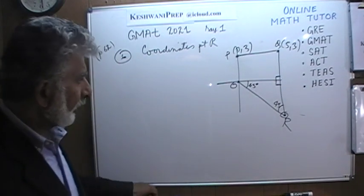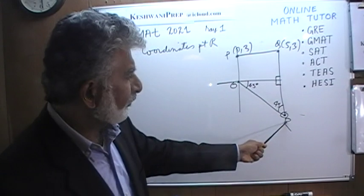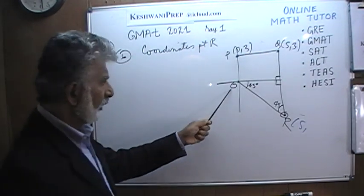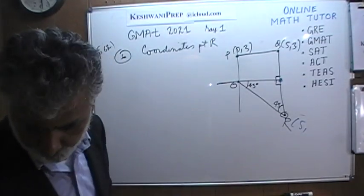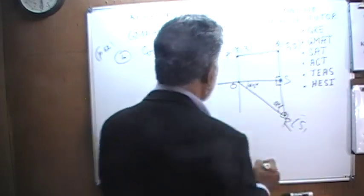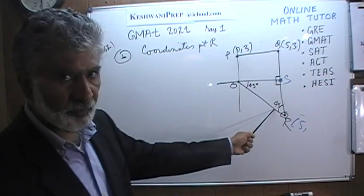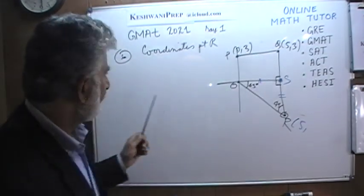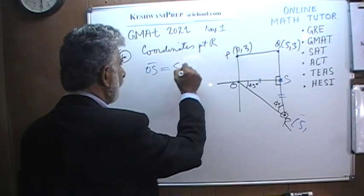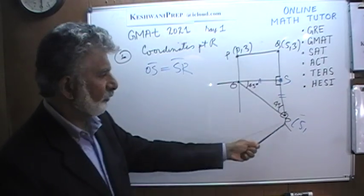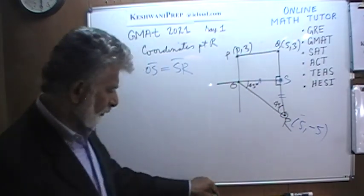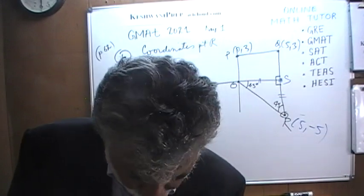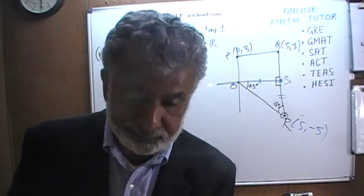The x-coordinate of R is straightforward — it's a straight line, so it's the same as Q: x = 5. Because this is an isosceles triangle (both angles are 45 degrees), the length of OS equals SR. OS is 5, so SR is also 5, but going downward — making it negative. The coordinates of R are (5, −5). Make sure you don't pick (5, 5); the answer is E.